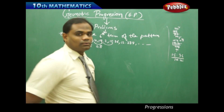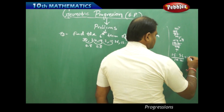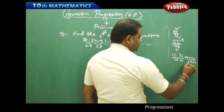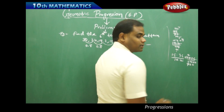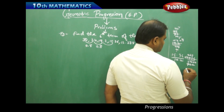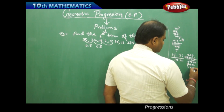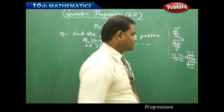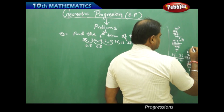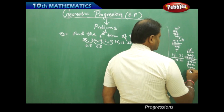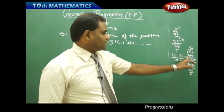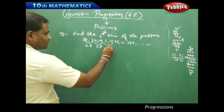Similarly I find the ratio of 15.36 by 19.2. When I simplify this, I get 4 over 5, and 4 over 5 is nothing but again 0.8.